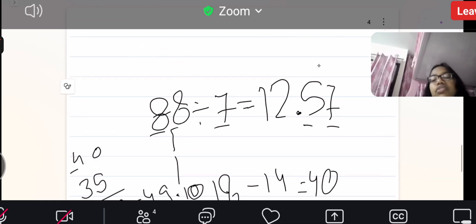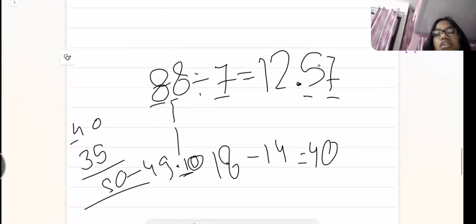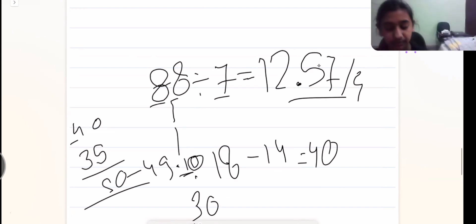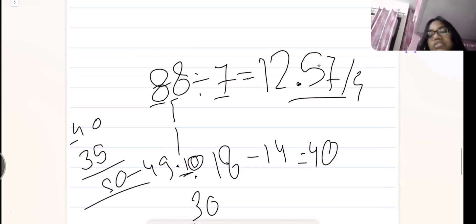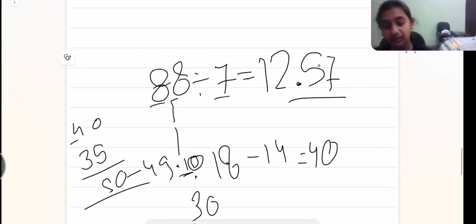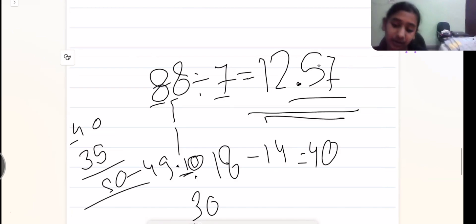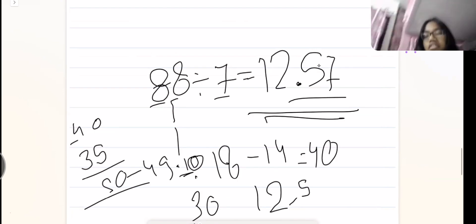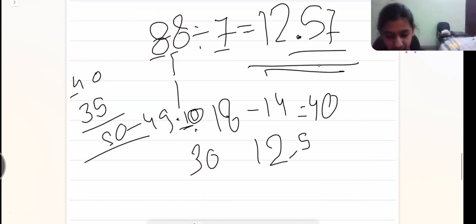Normally when you do division, you only have to write two decimal places. If you want to go further: 10 — 7 comes in the 7 table once, so we write 1, and the remainder is 3, giving 34 — and the cycle continues. But only two decimal points are needed. So 12.57 is our answer. We could also write it as 12 remainder 5 — that is also correct. It's your choice. You understood the decimal point concept now.